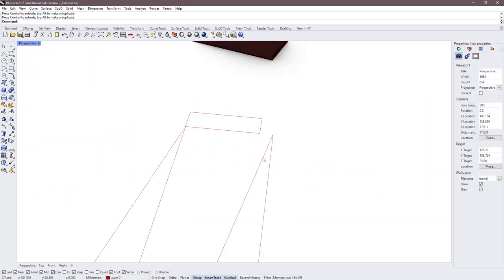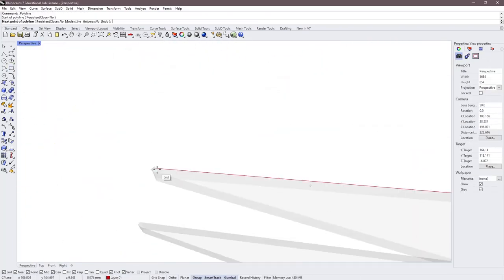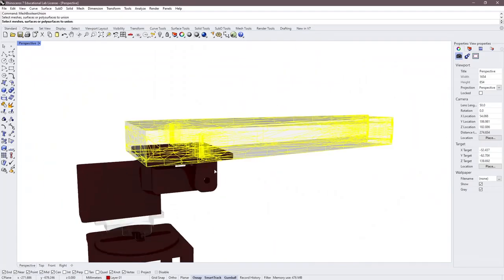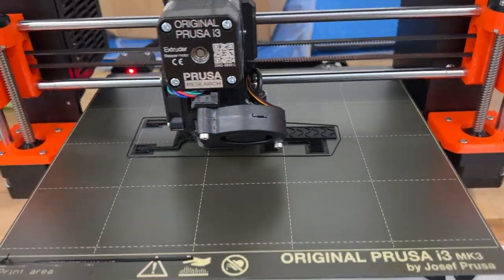After reviewing my design, I thought that it looked good and decided to 3D print my 3D modeled parts. After about 12 hours, the prints were done, and I started to try to put them together.